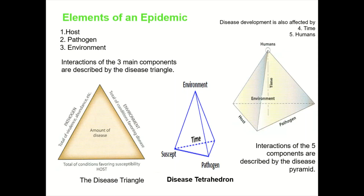So how are disease epidemics developed? There are different factors involved in disease epidemic development. Number one, the host must be susceptible. Number two, the pathogen must be virulent. Number three, the environmental factors must be favorable. Disease development is also affected by time — at which particular time the disease is going to take place — as well as the season, and by humans in terms of whether intervention practices important for disease control are being employed or not.